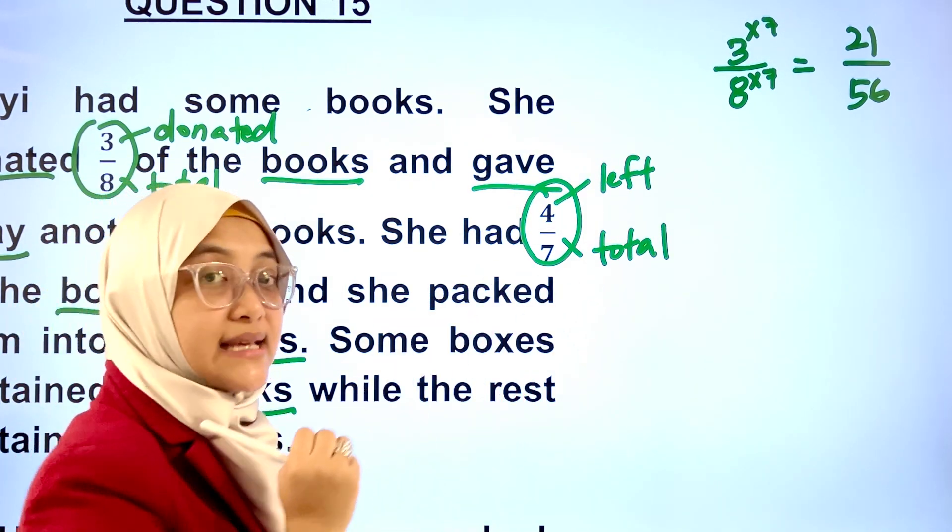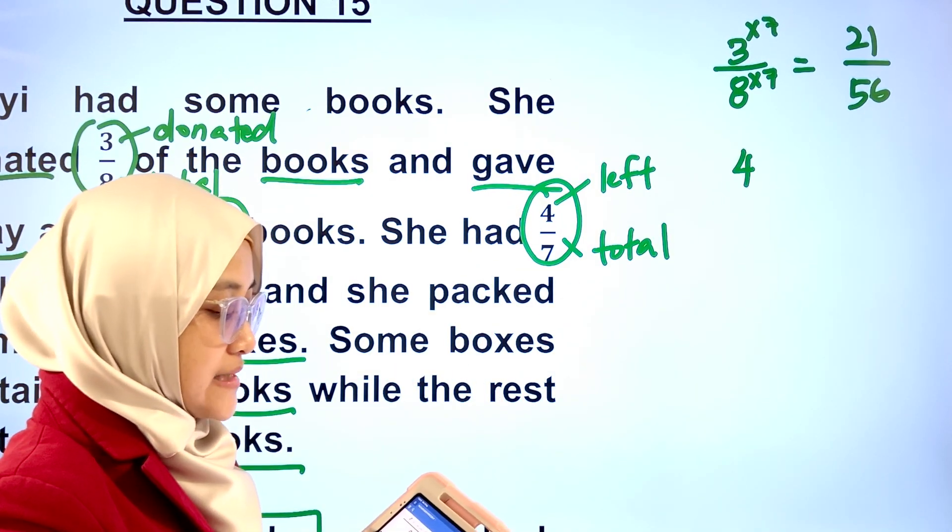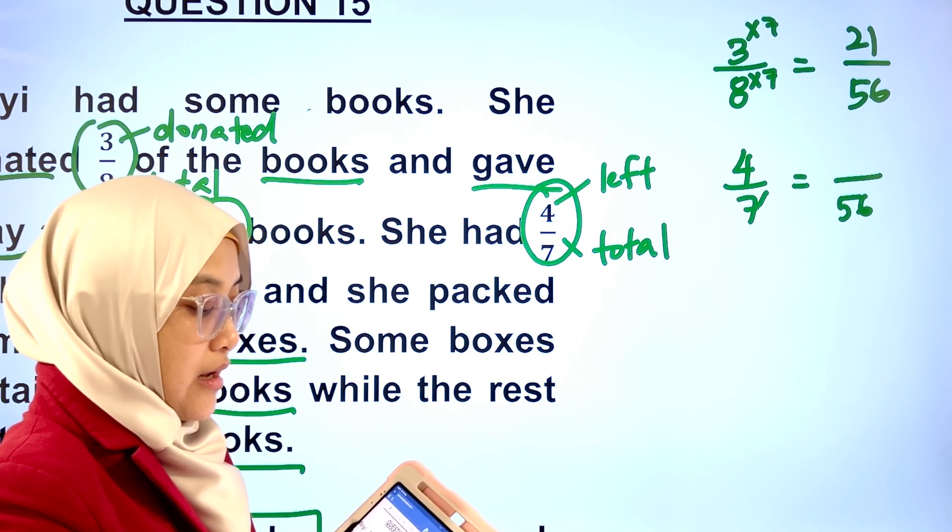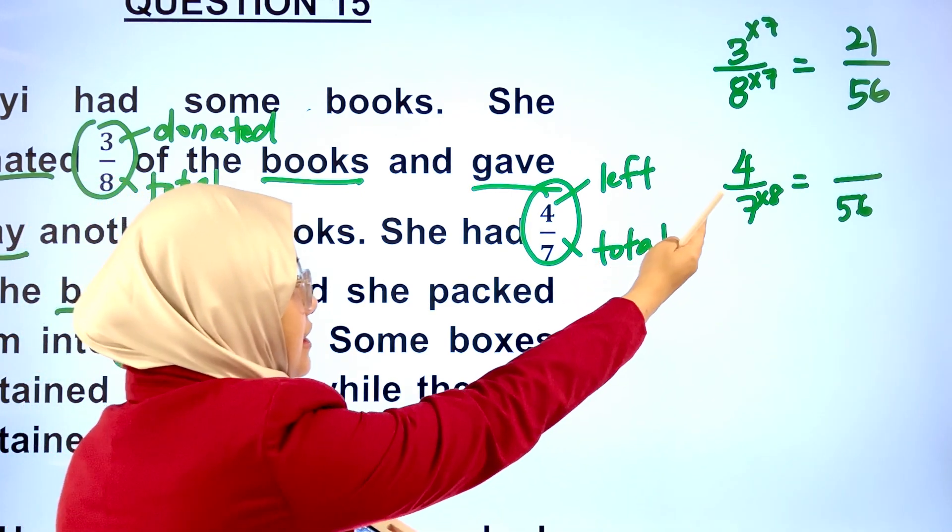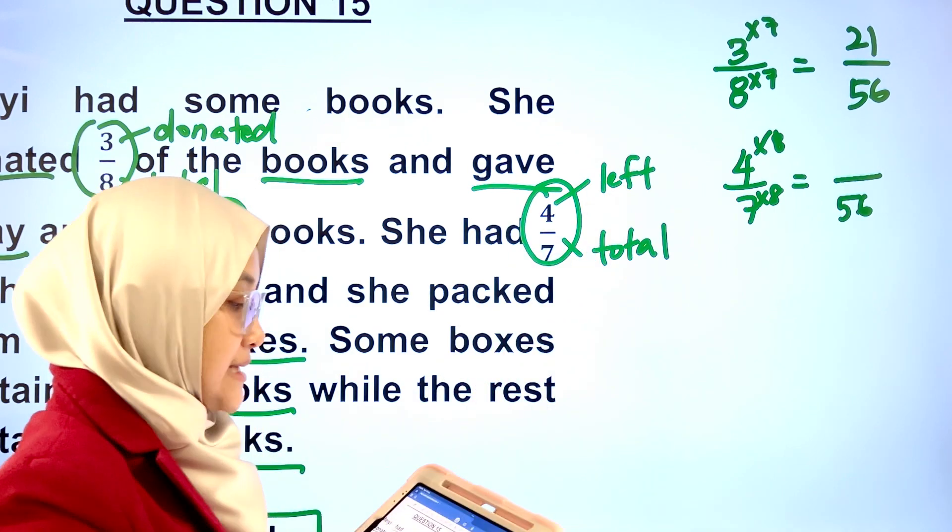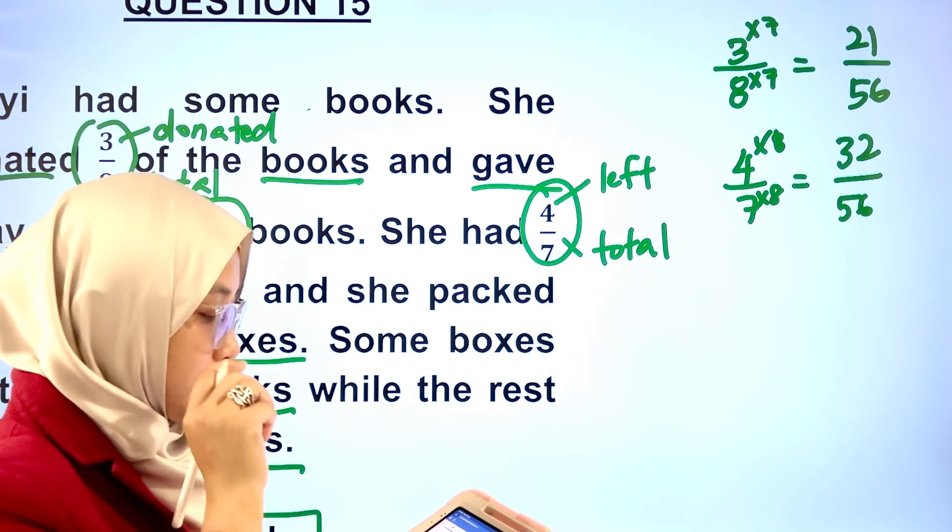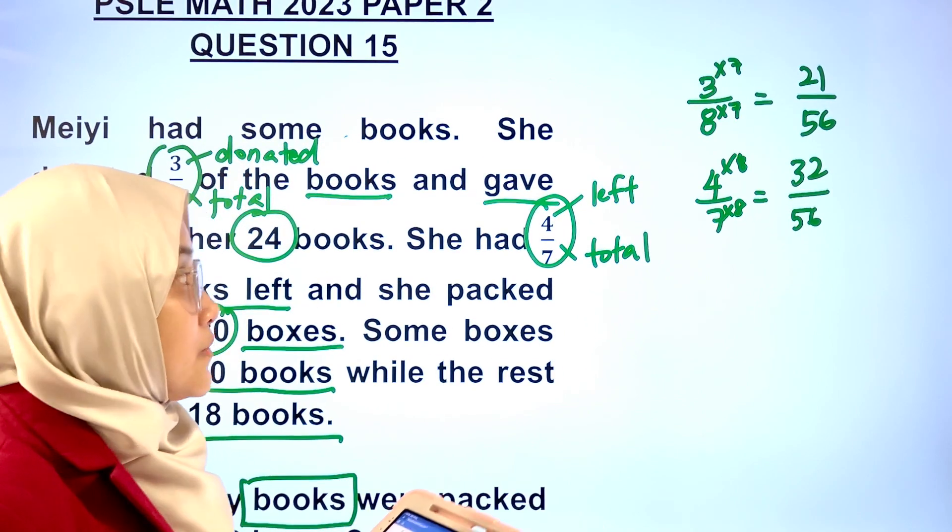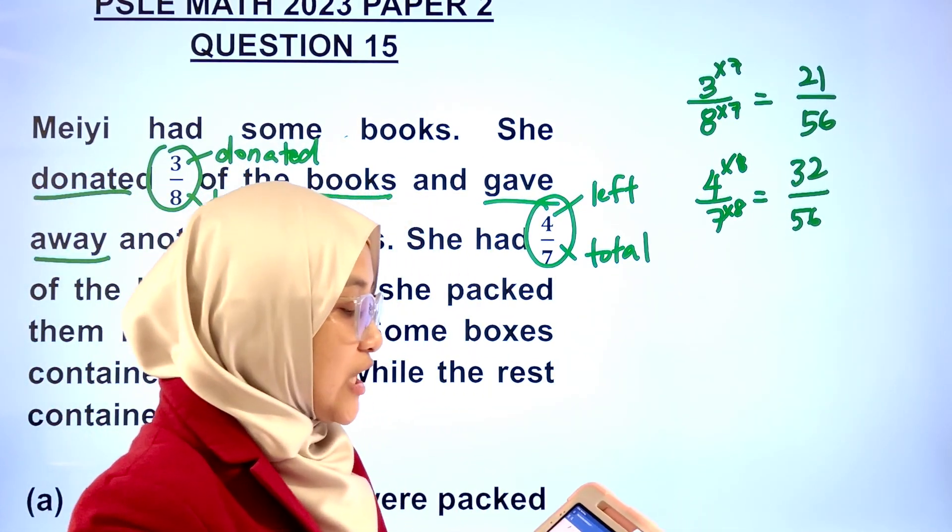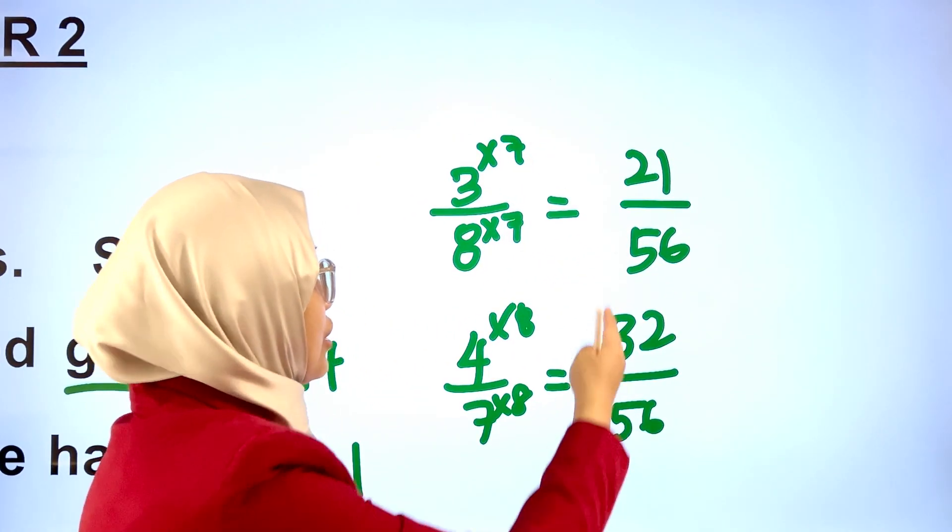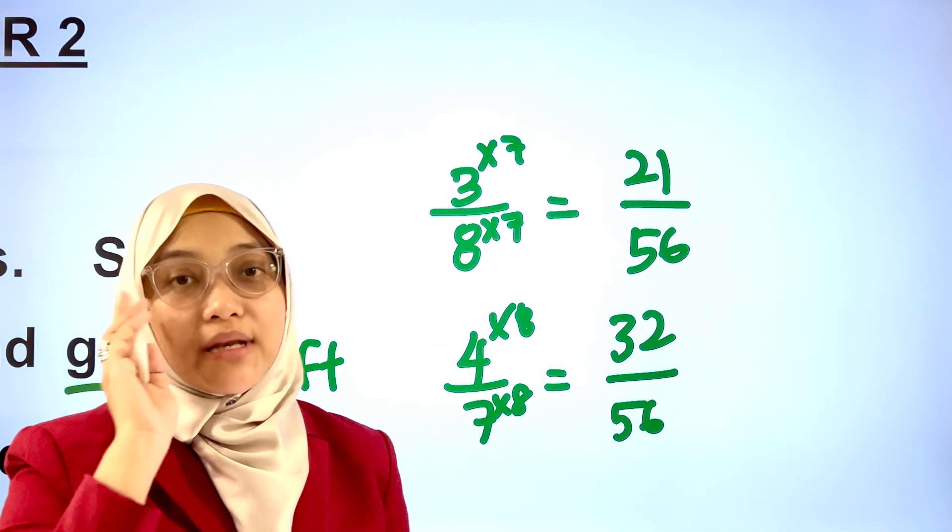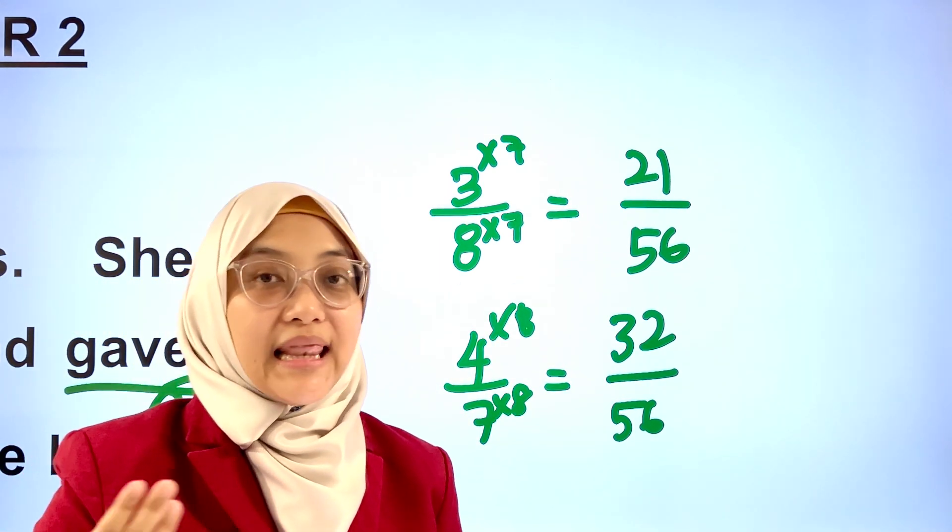Do the same to the second fraction, 4 out of 7. Change the denominator to 56. Multiply the denominator by 8. Do the same to the numerator. Multiply by 8 and we have 32. Recall, 21 refers to number of units of books donated. 32 refers to number of units of books left.